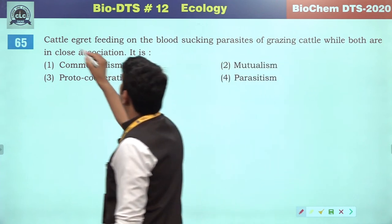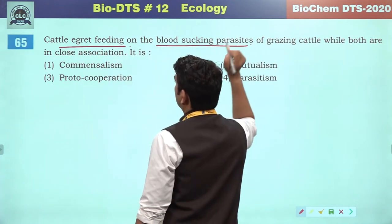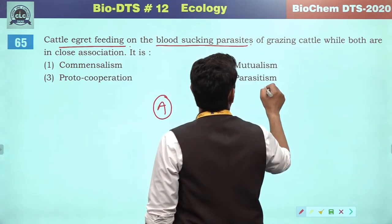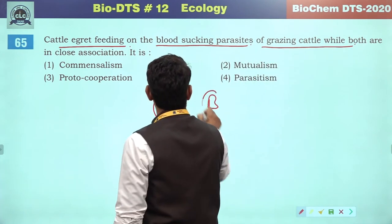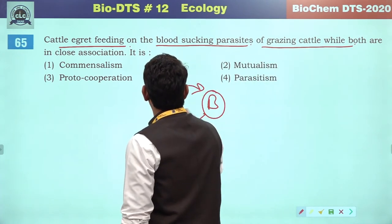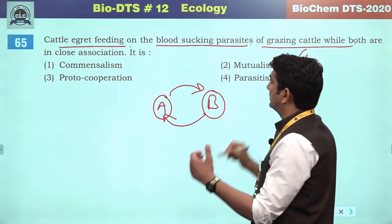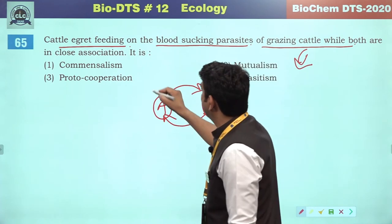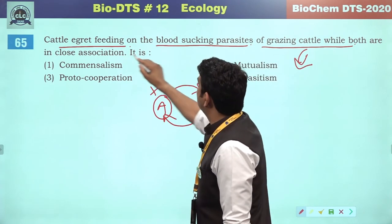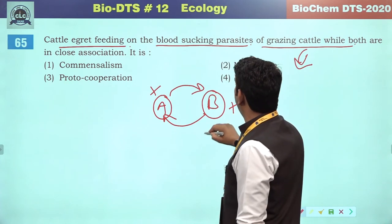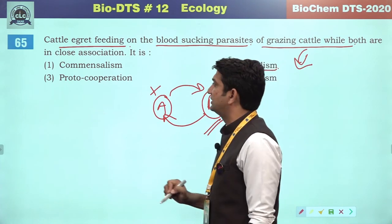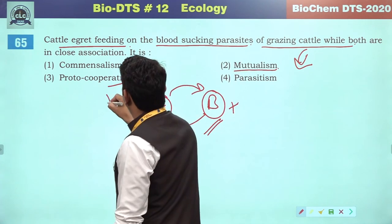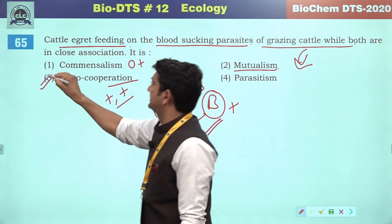Cattle egrets feed on the blood-sucking parasites on grazing cattle. The grazing cattle benefit from freedom from blood-sucking parasites. Cattle egrets get fed. Both are beneficiaries — this is not mutualism because mutualism is obligatory. This is proto-cooperation — a plus-plus non-obligatory interaction. So it will be the correct answer.